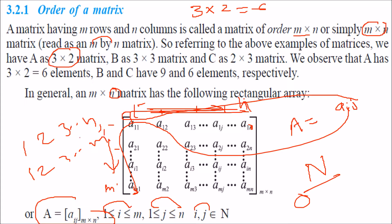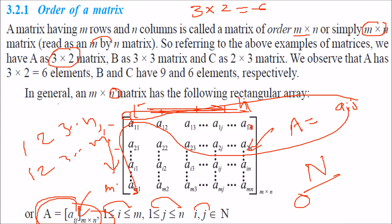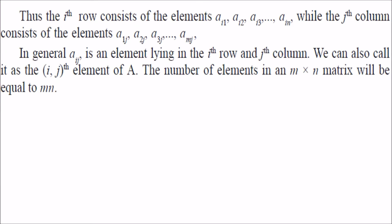Whenever we write about a matrix, we use this compact notation instead of writing out the full array. The i-th row consists of a_i1 to a_in, while the j-th column has all elements where j is constant. Any element a_ij is found at the intersection of the i-th row and j-th column, and we call it the (i, j)-th element of A. The total number of elements is m × n.